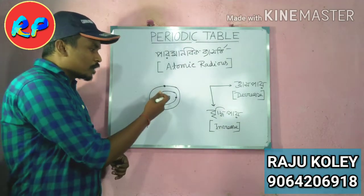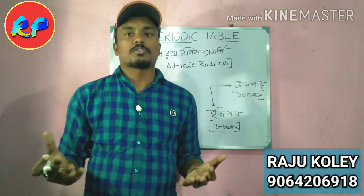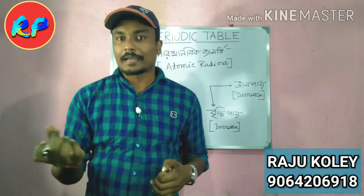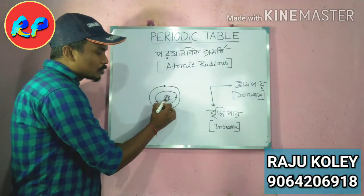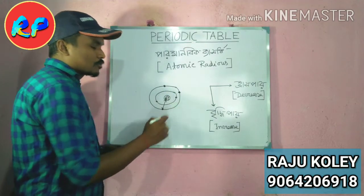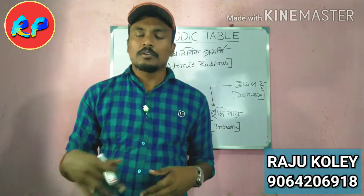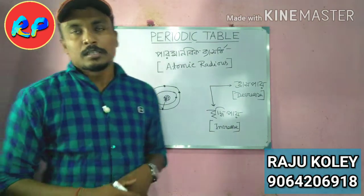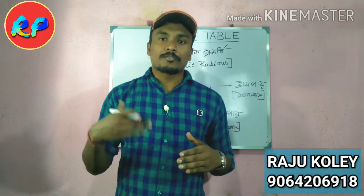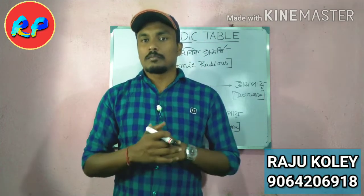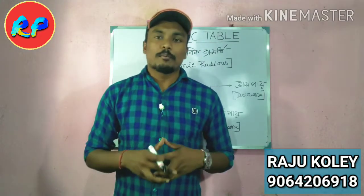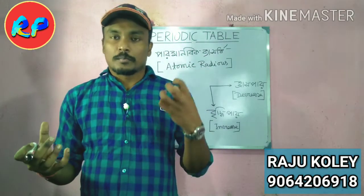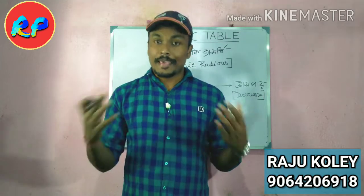When the electron-to-proton ratio is considered, generally the nuclear charge — the number of protons — increases along a period. As protons increase in the nucleus, the attraction between nucleus and outer electrons increases. So as we move along a period, the number of protons increases and the electrons are pulled closer, so the atomic radius generally decreases along a period.